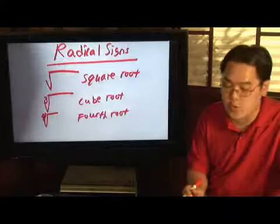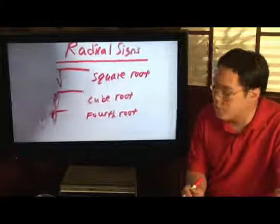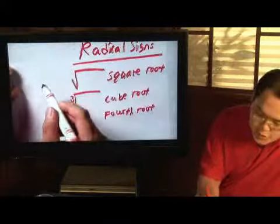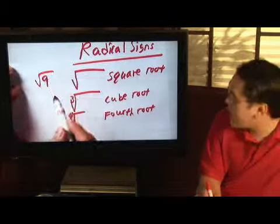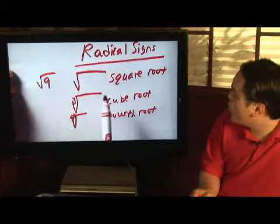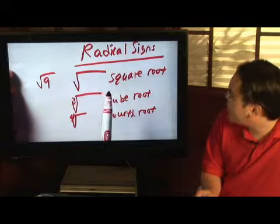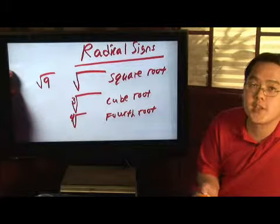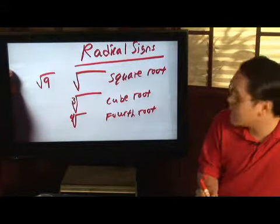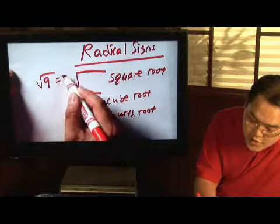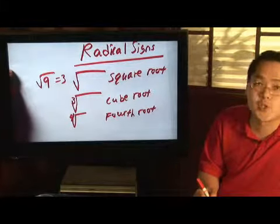Here's an example with square roots. Suppose you have square root of 9. What you have to ask yourself is, what number squared gives me 9 on the inside? In other words, what number multiplied by itself twice gives you 9? Well, that obviously is going to be 3. So the square root of 9 is 3.